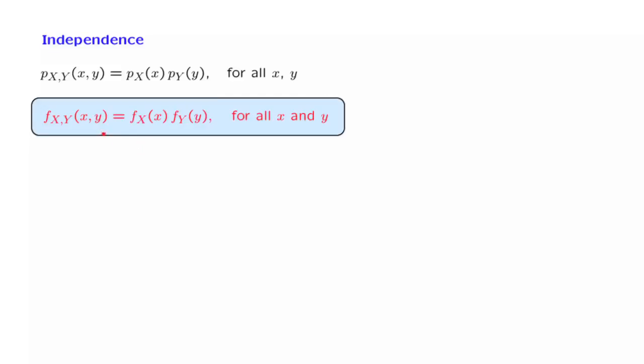Our guide comes from the discrete definition. By analogy with the discrete case, we will say that two jointly continuous random variables are independent if the joint PDF is equal to the product of the marginal PDFs.